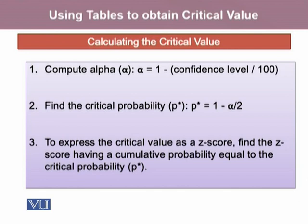Alpha equals 1 minus the confidence level divided by 100. Then in the next step, we find the critical probability p*, which equals 1 minus alpha divided by 2. In the third step, to express the critical value as a z-score, we find the z-score having a cumulative probability equal to the critical probability p*.